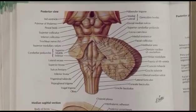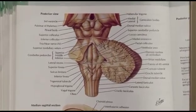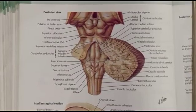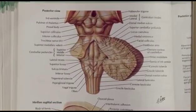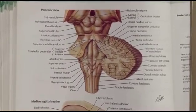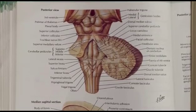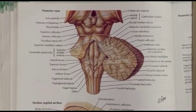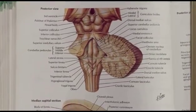Considering the boundaries of the 4th ventricle, we have two lateral boundaries, a floor, and a roof. The floor of the 4th ventricle is also known as the rhomboid fossa, and the roof is also known as the posterior wall.